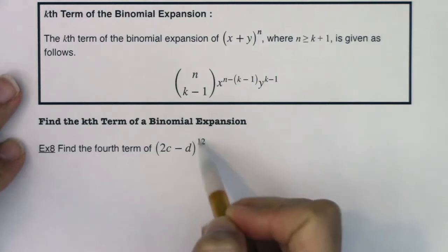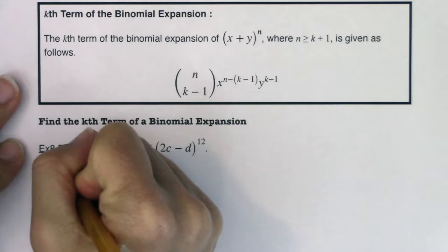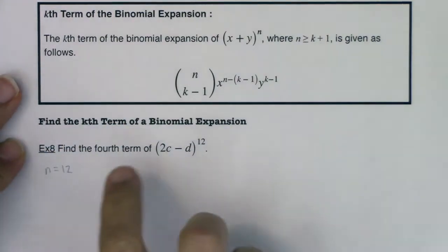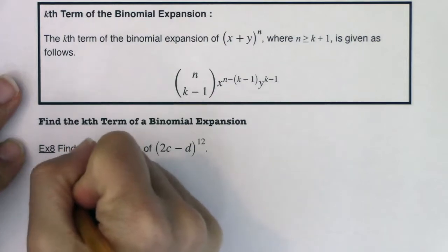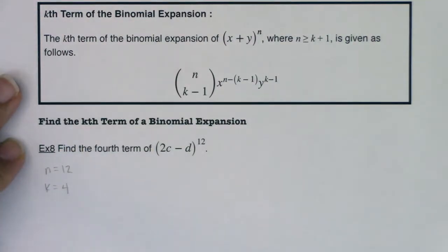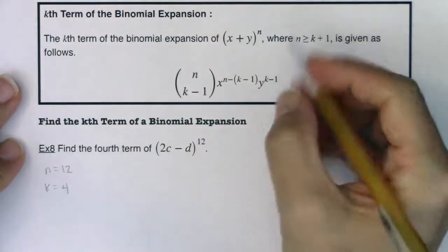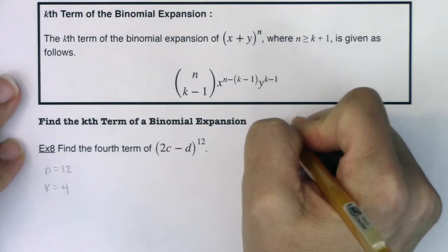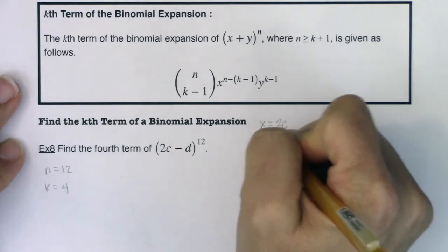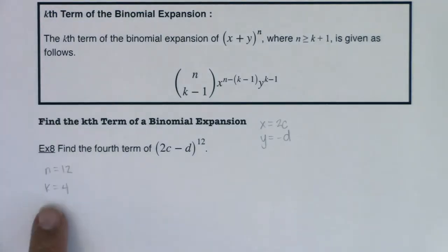All right, so in this case, our n, the power we want, the exponent we want is 12. So let's keep that in mind, n is equal to 12 in this case. All right, we would like the fourth term, so k is equal to 4. All right, x is getting played by 2c, and y is getting played by negative d. So if we're going to really sub this out, x is like saying 2c in this case, and y is negative d. So if we want to handle all of this, these are going to be our substitutions as we go through.